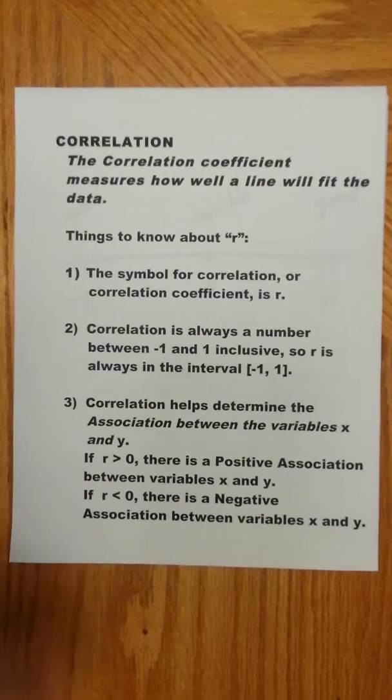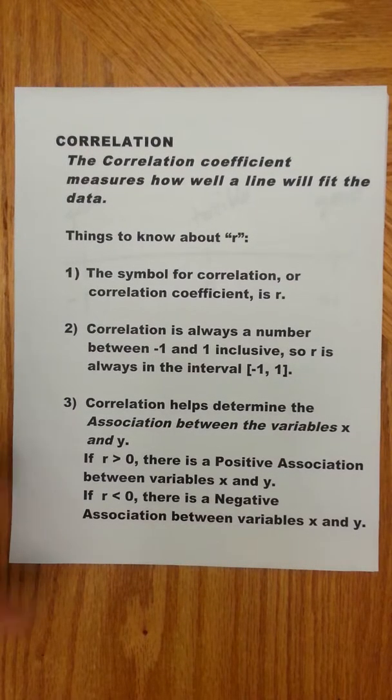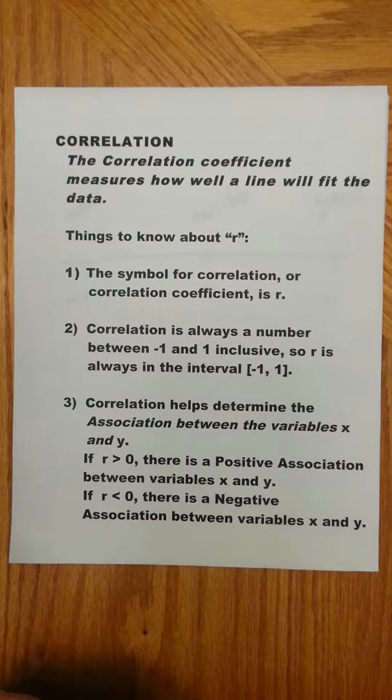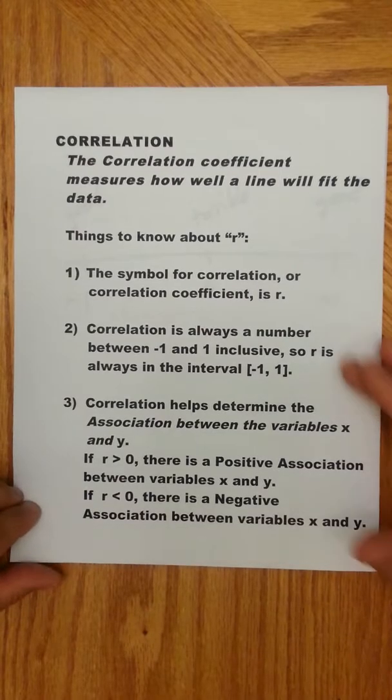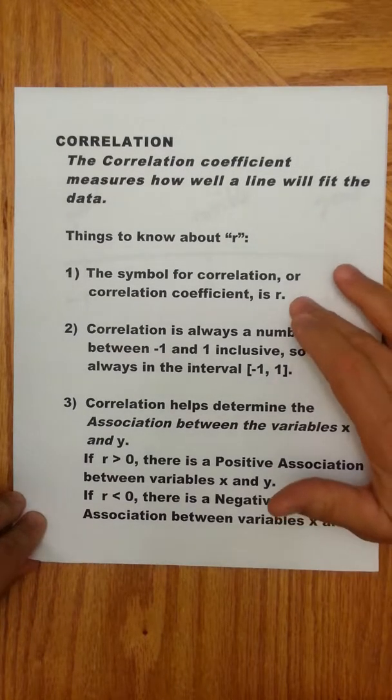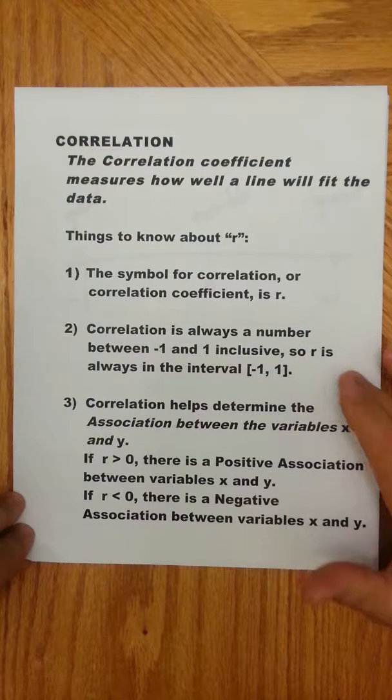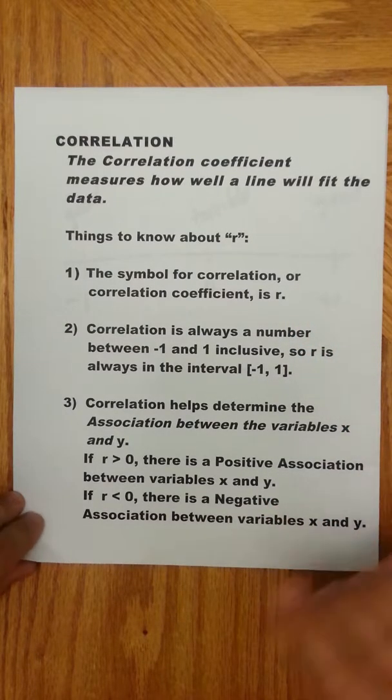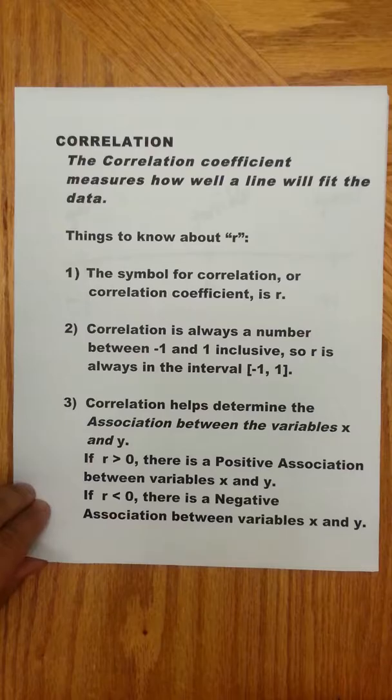In another video we introduced a little bit what correlation coefficient is, but a definition you really should commit to memory is that the correlation coefficient measures how well a line, specifically a line, will fit the data. The symbol for this is R, the letter R. Correlation is always a number between negative 1 and 1, inclusive.